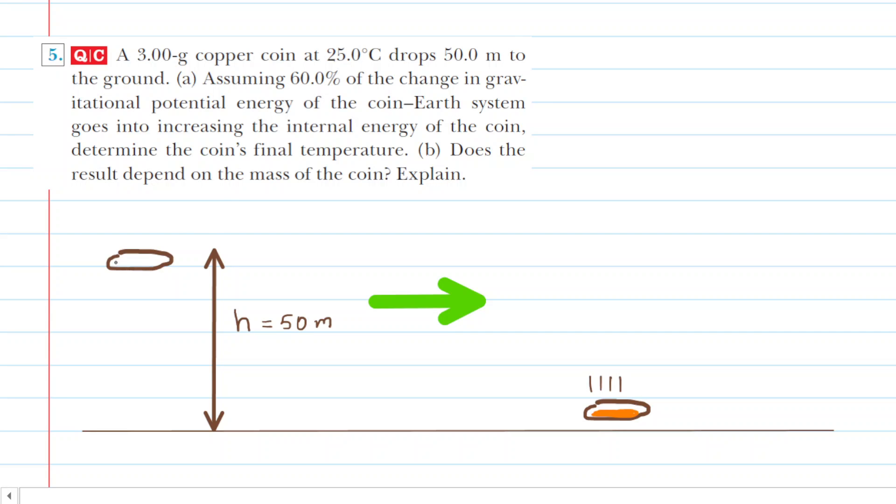In this question, we have a copper coin initially at a height of 50 meters. We need to identify what type of energy is present when a stationary coin is lifted 50 meters off the ground. That would be gravitational potential energy, which we'll label as PE_G.